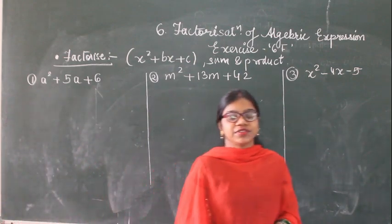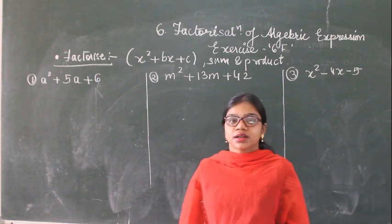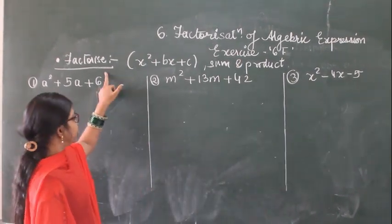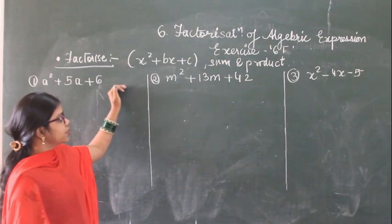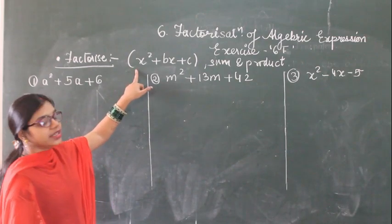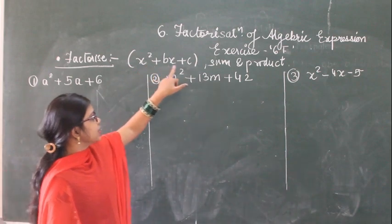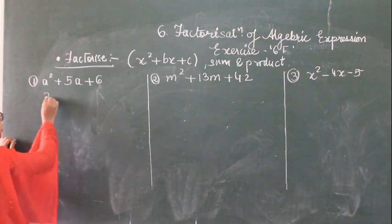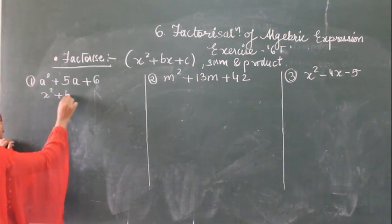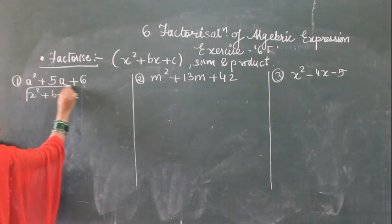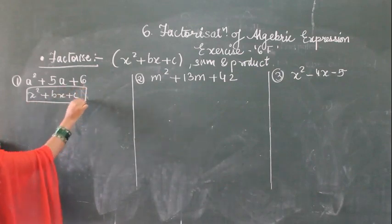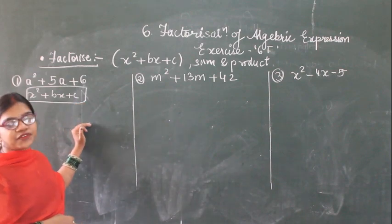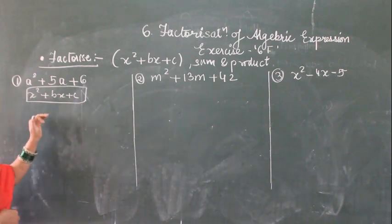Hello students, good morning. Today we will start exercise 6f and here we will have to factorize the given expression. This expression will be in the form of x square plus bx plus c. The equation will be in the form of x square plus bx plus c and then we have to factorize this. So for this, what we have to do?